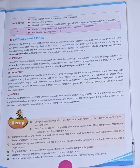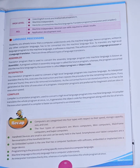The second type of language translator is interpreter. An interpreter is a translator program which is used to convert a high-level language program into machine language program. It translates the high-level language program into machine language program line by line. Since it is translating the program line by line, the execution speed of the interpreter is slower.